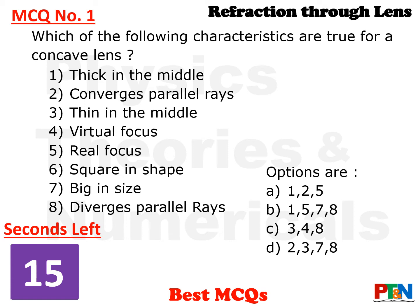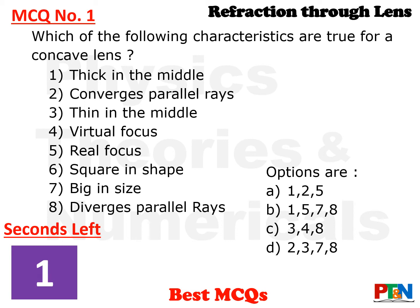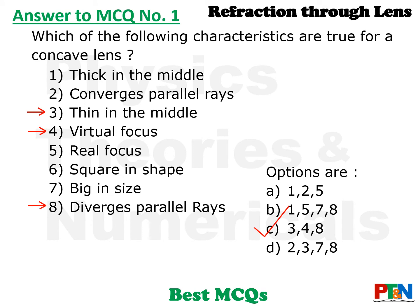Which of the following characteristics are true for a concave lens? There are 8 characteristics given, including: thick in the middle, it converges parallel rays, thin in the middle, and others. You need to find which characteristic is true for a concave lens. You have 15 seconds. Time is up. The answer is option C — statements 3, 4 and 8 are correct. For a concave lens: it is thin in the middle, it has a virtual focus, and it diverges parallel rays.